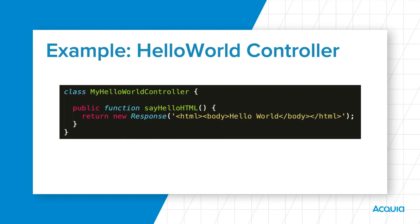It helps to conceptualize these concepts by experiencing them in code. Note that these examples have been overly simplified to demonstrate the concepts. We first begin with controllers. Here we have a controller class called MyHelloWorldController. The controller's purpose is to return a response of HTML which prints Hello World — that is exactly what the sayHelloHTML method does.